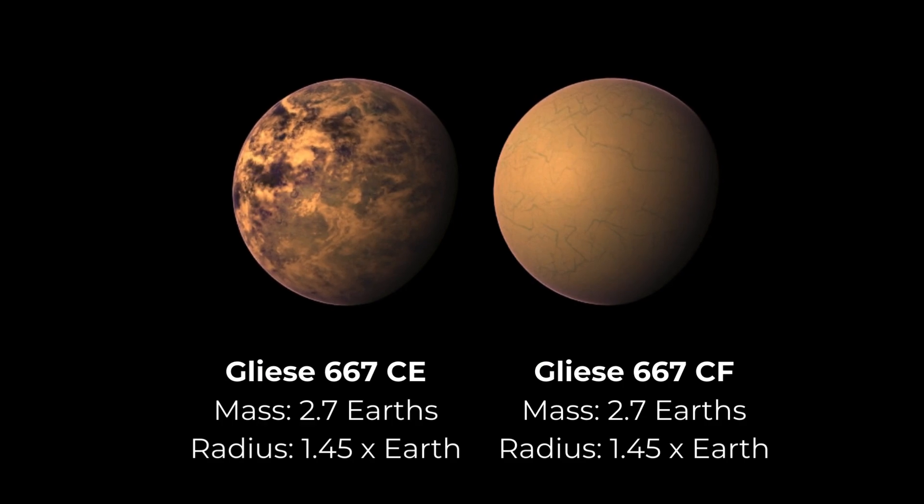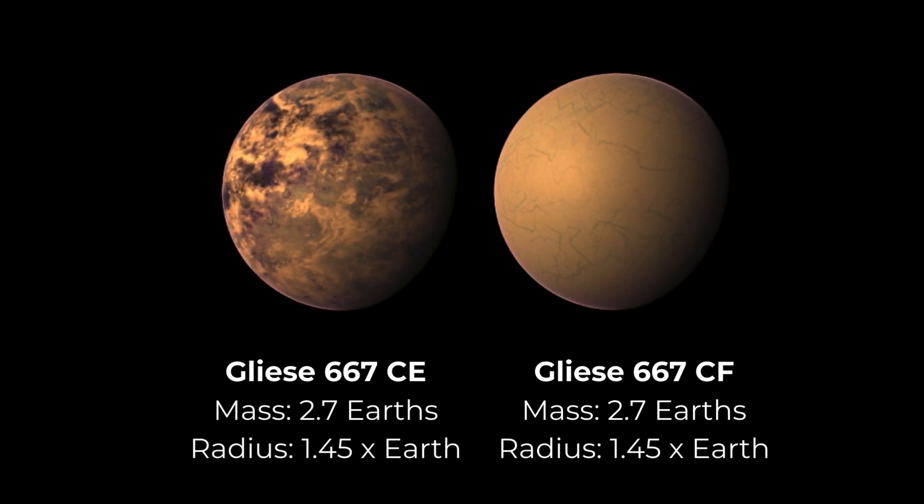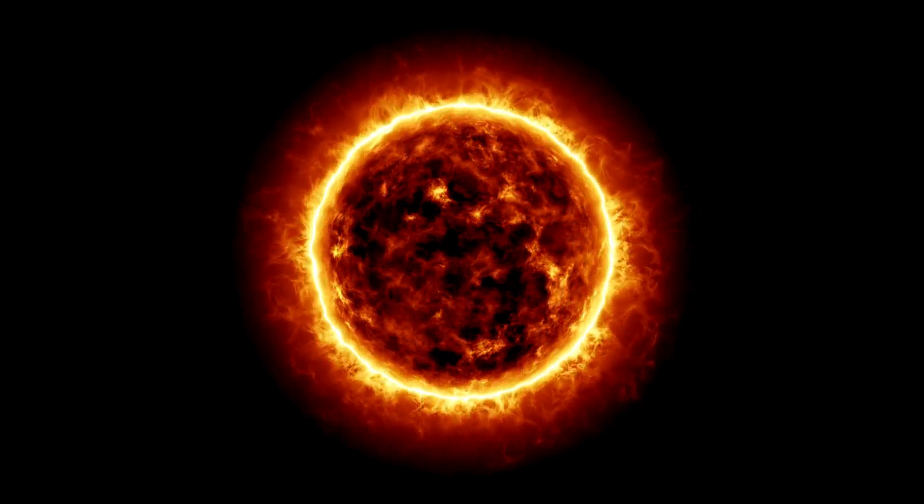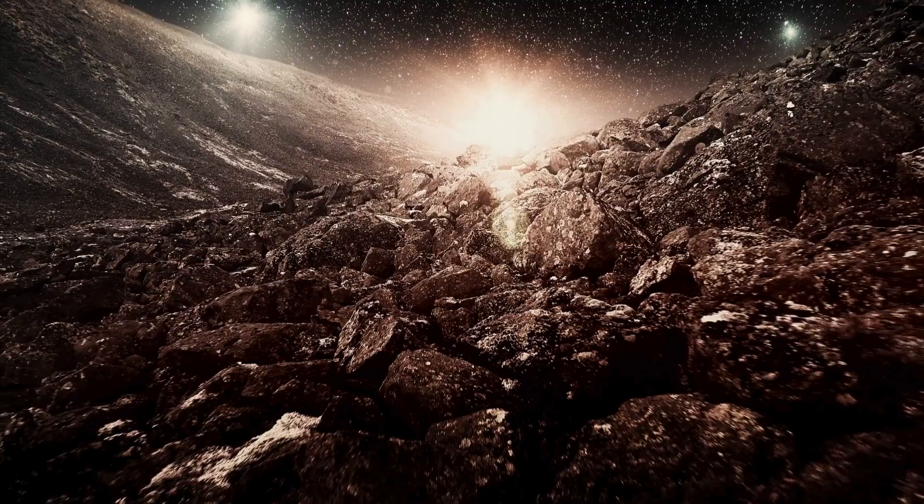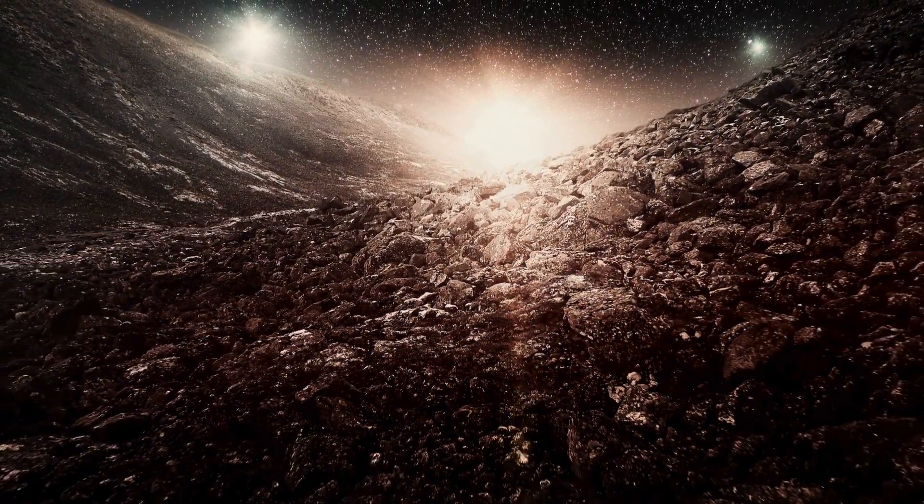The other two potentially habitable planets, Gliese 667CE (mass 2.7 Earth's, radius 1.45 times Earth) and Gliese 667CF (mass 2.7 Earth's, radius 1.45 times Earth), are nearly identical. Positioned farther from their parent star, they receive less energy, possibly making them too cold to support familiar life. Nevertheless, a thick atmosphere would be advantageous for potential life on these planets, trapping heat and sustaining favorable temperatures.